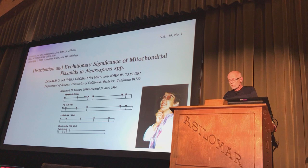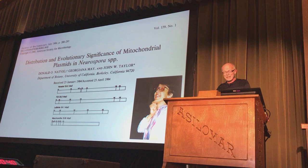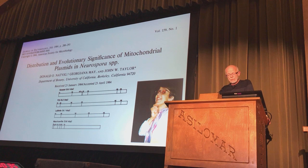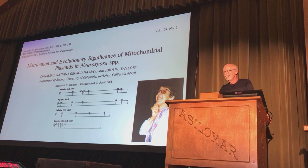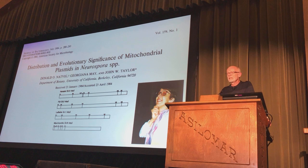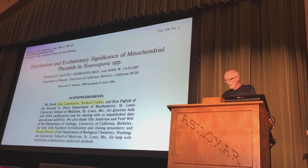This was the first paper that we published. Georgiana May was a master's student who came to Berkeley to be my first grad student. The paper we did was on the smallest pieces of DNA possible — mitochondrial DNA plasmids. We thought this was the most wonderful thing we'd ever done. David Perkins had just been elected to the National Academy, so we sent it to him, and he wrote the nicest rejection letter I've ever gotten. It started out 'Dear John and Don, I don't think I've ever done anything of such significance as to deserve publication in the Proceedings of the National Academy.' So we sent it to the Journal of Bacteriology.